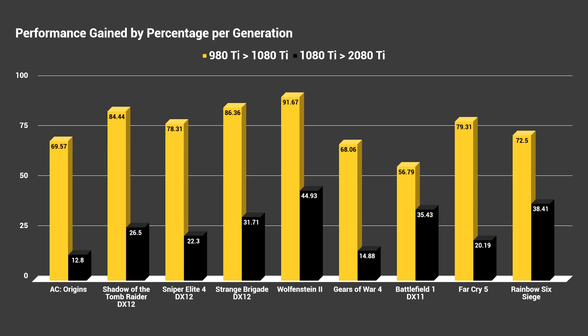Going from Pascal to Turing is barely anything at all, and that's pretty much the case across the board. There are a couple of outliers like Wolfenstein 2, which had big optimizations for Vulkan — that got a 44.9% improvement for Turing. But Maxwell to Pascal in that same game was still a 91.67% performance increase — almost a 100% gain. Many of the titles show over 80% gains going from Maxwell to Pascal, which is a huge leap in average FPS performance between those generations.